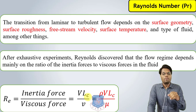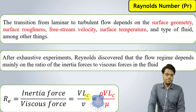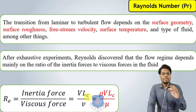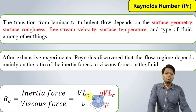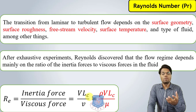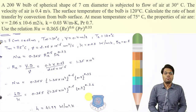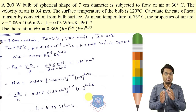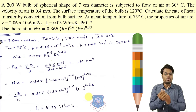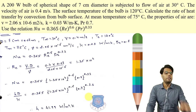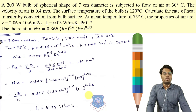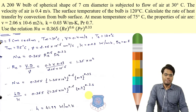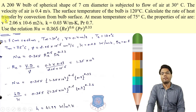Now, based on these numbers, let us learn how to solve numericals based on forced convection. Whenever there is motion of a fluid by some external arrangement, the velocity of the fluid is predefined, and that kind of convection is known as forced convection. Let us now solve a forced convection numerical.